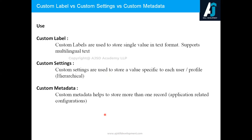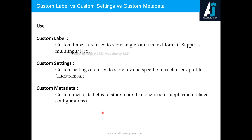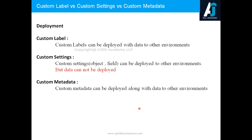Custom metadata also allows us to store application-related configurations. If we have more than one record — for example, I want to store configuration with a couple of fields and there are 10 records — then rather than creating 10 custom labels and 10 custom settings, creating a single custom metadata type is the right option. When you have more than one record, custom metadata is the right choice.